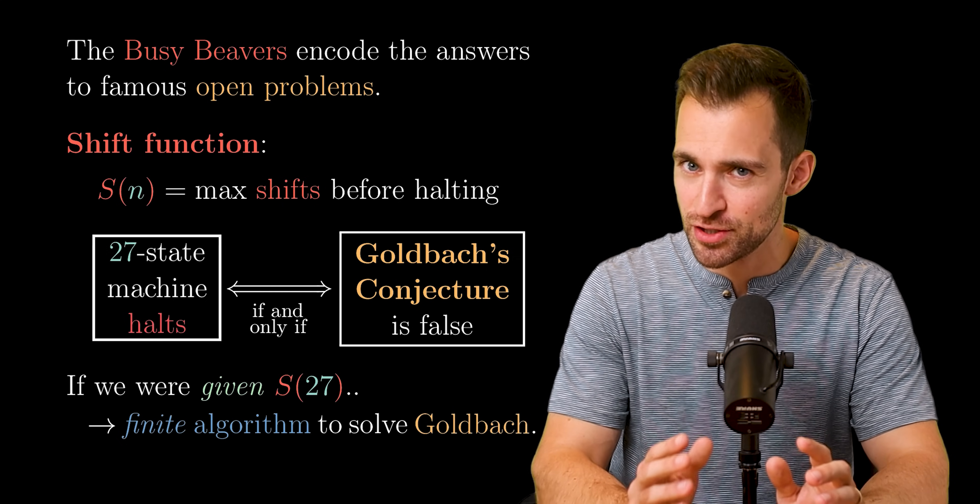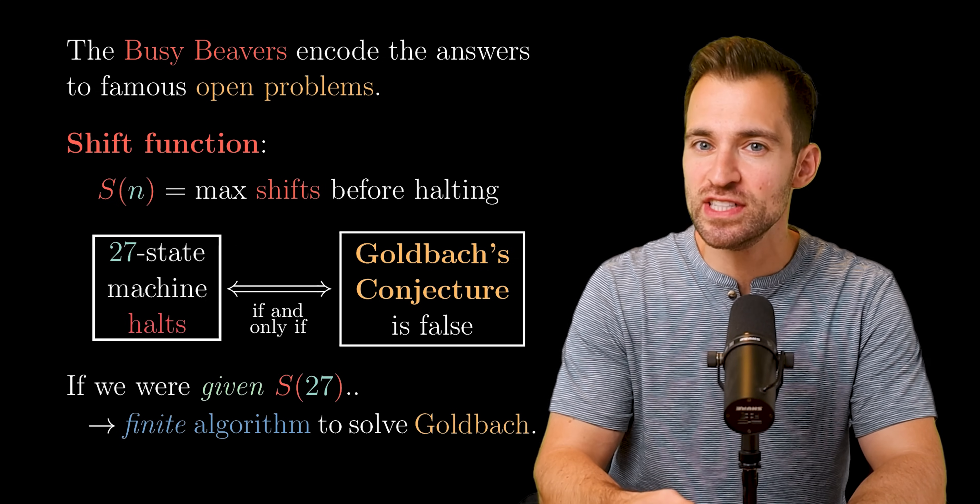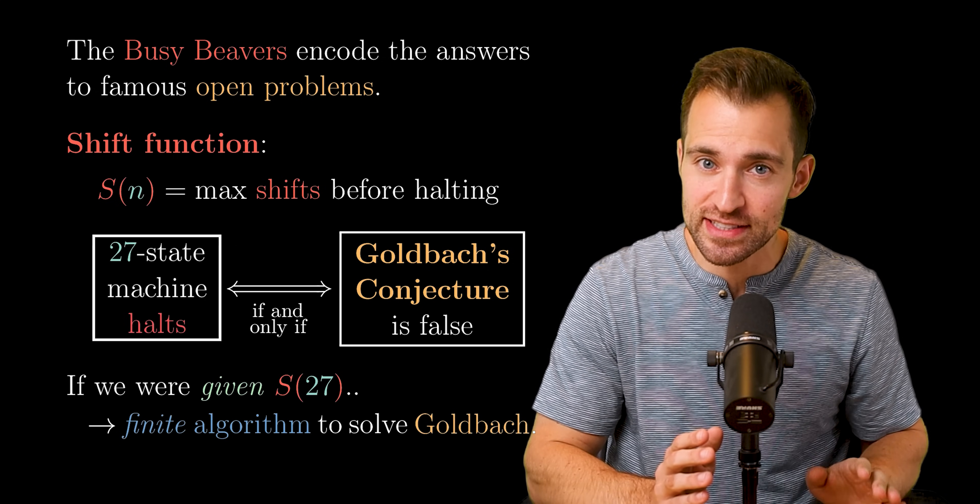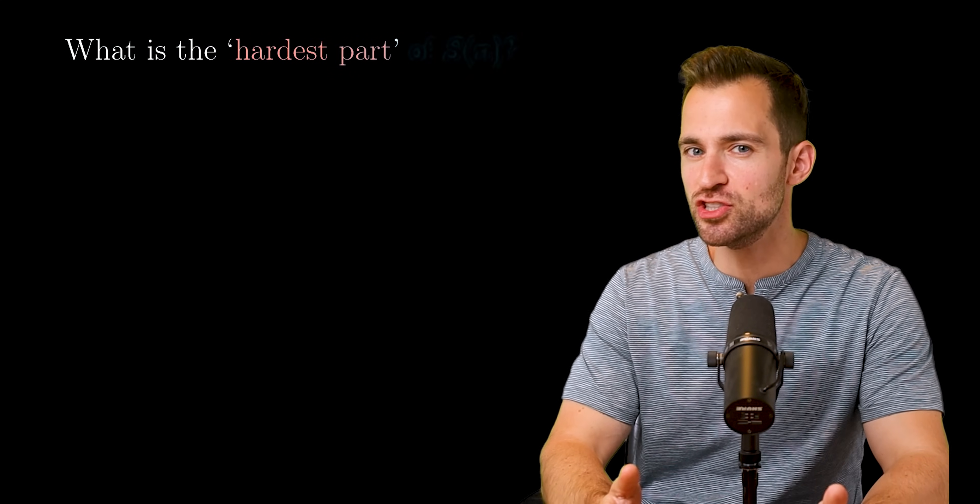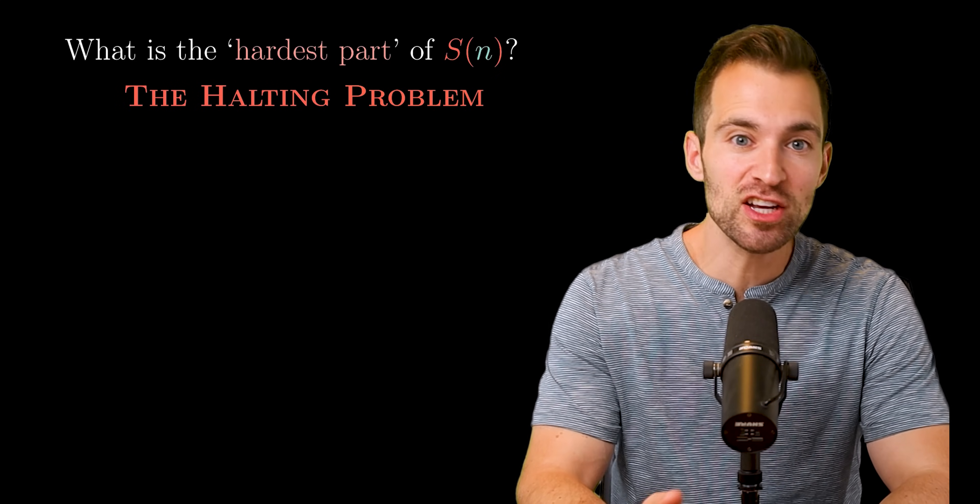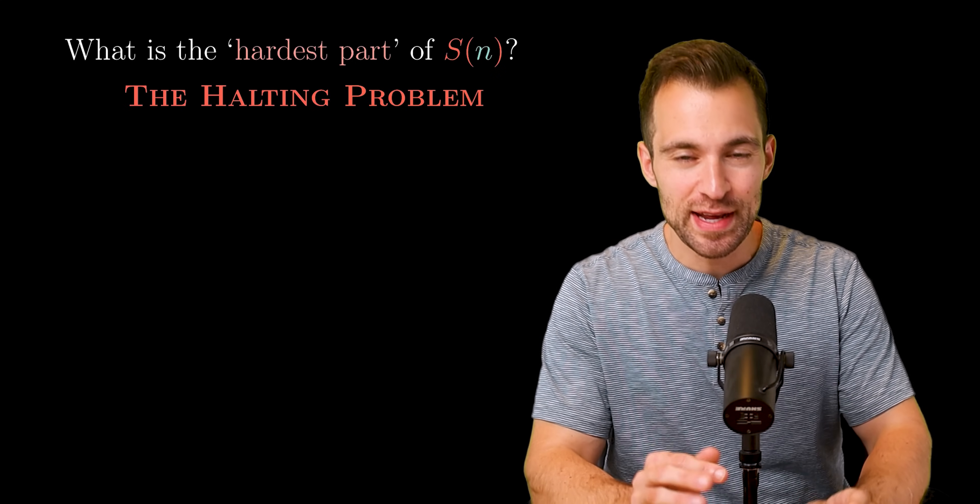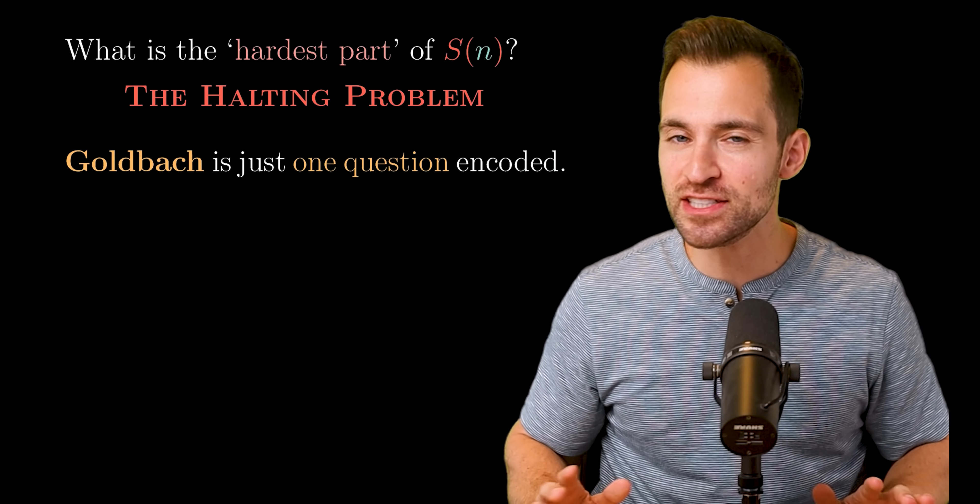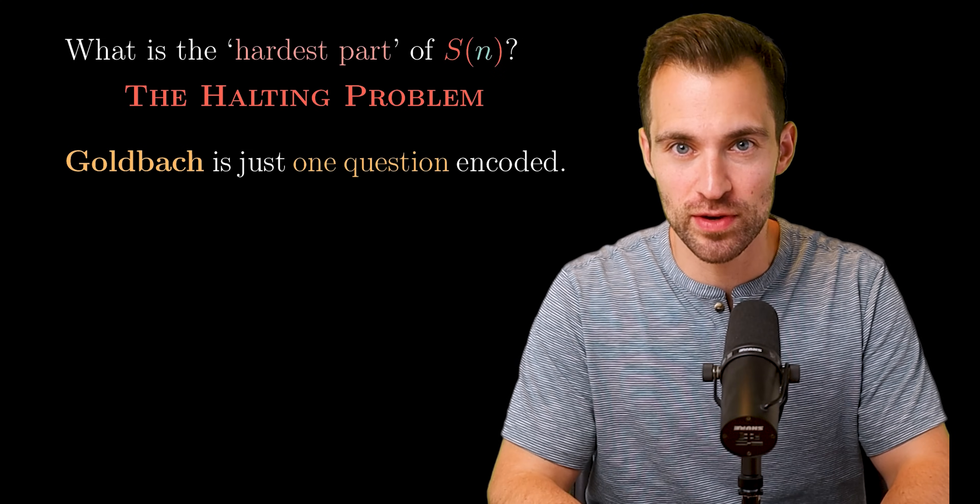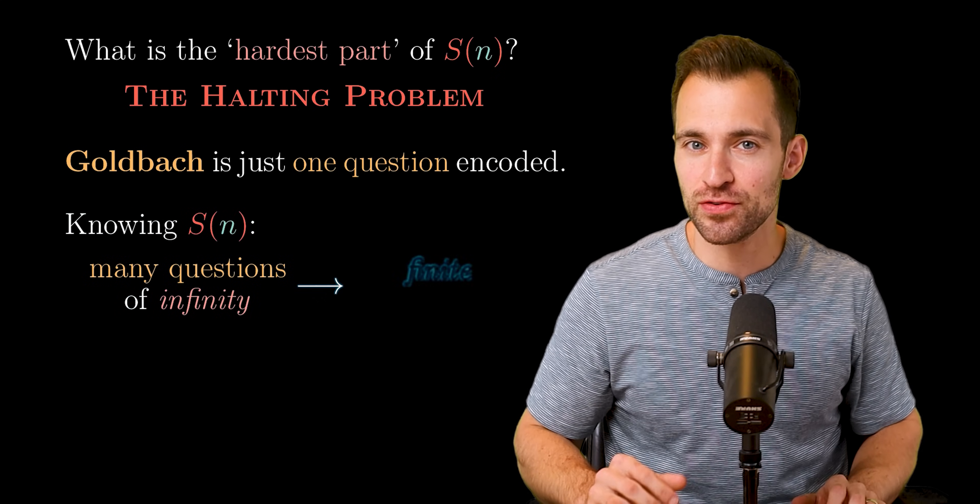Now, S(27) is an absurd number, so this is not a practical solution. However, it shows that S(27) turns a question of infinities into a mere finite calculation, which means it resolves the hardest part of the problem. And so what is the hardest part addressed by the shift function? It's the halting problem. We can't compute the function because the halting problem forbids a general finite algorithm. And what's interesting is Goldbach is just one question encoded in the busy beavers. In reality, a massive set of questions may be framed this way.